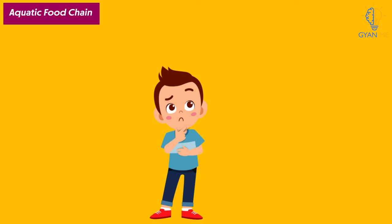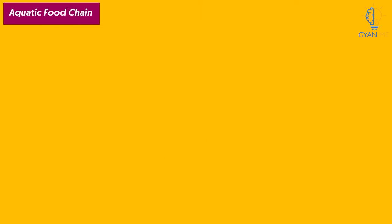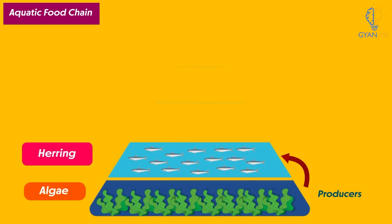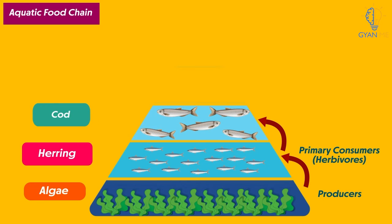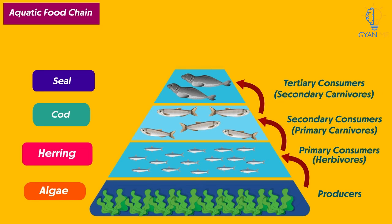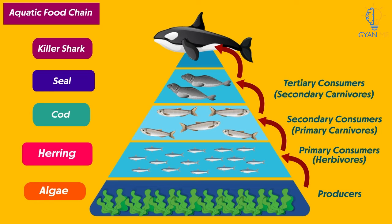Students, can you think of any other type of aquatic food chain? Here, producers are algae instead of phytoplanktons, which in turn are eaten up by small fishes like herring fish. These small fishes are at the second trophic level, called herbivores. They are eaten up by bigger fish, forming the third trophic level of secondary consumers. Seals eat these larger fishes and form the fourth trophic level of tertiary consumers. The killer shark, which is the biggest carnivore, forms the fifth trophic level, called quaternary consumers or top order carnivores. This aquatic food chain starts with phytoplanktons or algae as producers.